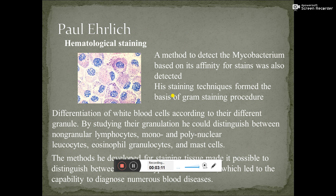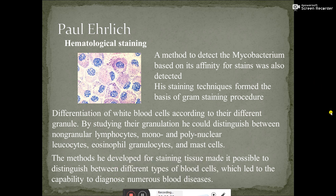When he stained cells with different types of stains like methylene blue, he found that white blood cells had a different granulation pattern. Based on this granulation pattern, he was able to distinguish between non-granular lymphocytes, mononuclear lymphocytes, granulocytes, and mast cells. During those days, Paul Ehrlich was associated with Robert Koch, who was working on Mycobacterium tuberculosis, the tubercle bacillus which causes tuberculosis.